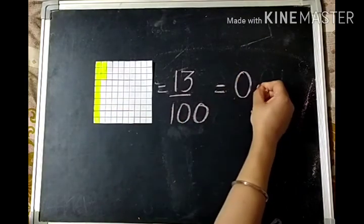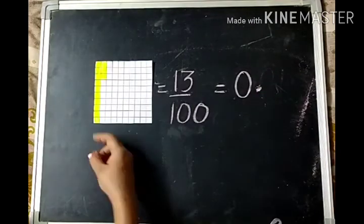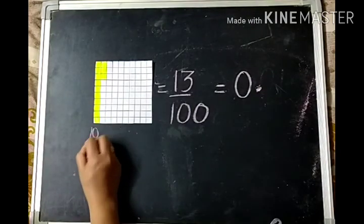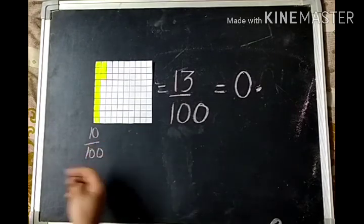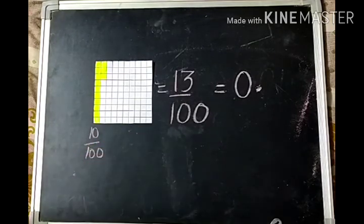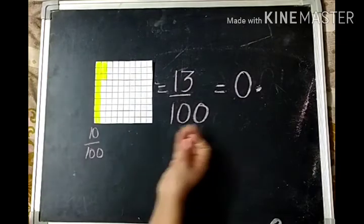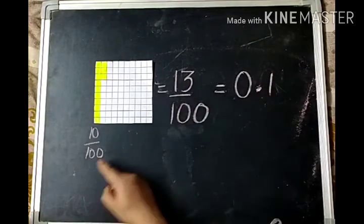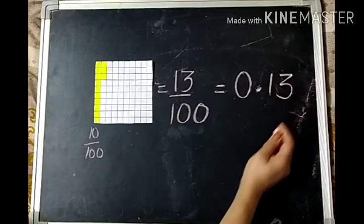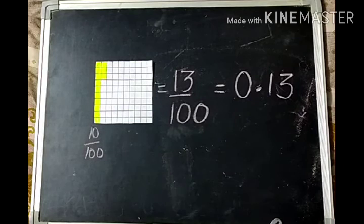So we'll write it as zero point — how many tenths will we make? This ten hundredths means one tenth. We have compared it also, so this is one tenth and three hundredths. This will be written as zero point one three.